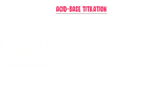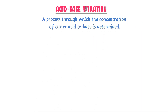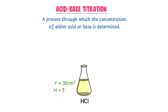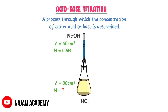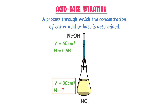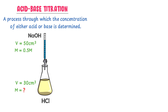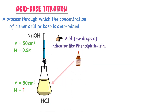What is acid-base titration? A process through which the concentration of either an acid or a base is determined is called acid-base titration. For example, consider 30 cm³ of HCl solution in a conical flask — we want to find its concentration. We take 50 cm³ of sodium hydroxide solution in the burette with a molarity of 0.5 M. We know that acid HCl reacts with base sodium hydroxide to form salt plus water, so we react them together. The second step is to add a few drops of an indicator to the conical flask containing the analyte.